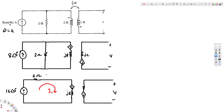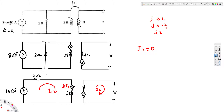We assign I1 to the first mesh and I2 to the second mesh. Since the second mesh is open, I2 equals zero. With I2 = 0, the voltage across the open branch equals the voltage of the dependent source. The mutual impedance is j×omega×M = j×4×0.5 = j2, so the dependent source values are j2×I2 and j2×I1. The voltage we want equals j2×I1.